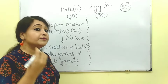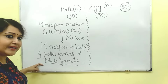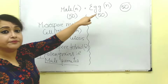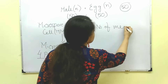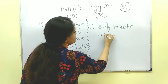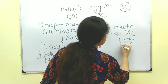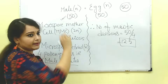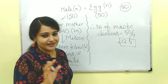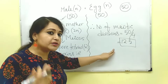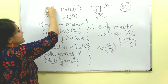So if we want 50 male gametes, how many meiotic divisions would be required? For getting 4 male gametes, we require 1 meiotic division. So if we want 50 male gametes, the number of meiotic divisions would be 50 divided by 4, that is 12.5. But can cell division number be in decimal? No, it's not. That means the minimum number of meiotic divisions required would be 13. So for making 50 male gametes, we need 13 meiotic divisions.